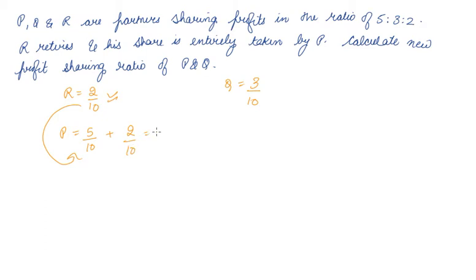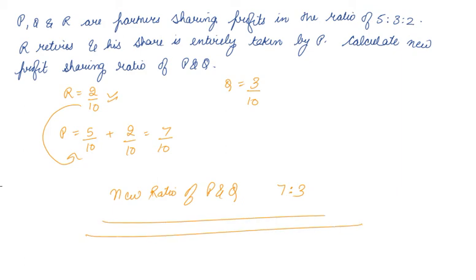The new ratio of P and Q will be 7:3. It is as simple as that. So these are the few examples or techniques in which you can calculate the new profit sharing ratio. I hope you like our video. Please download our Scholars Learning app and enjoy the learning experience with us.